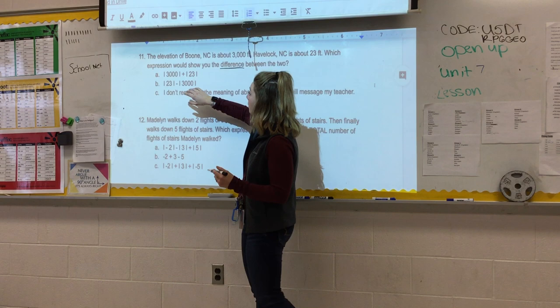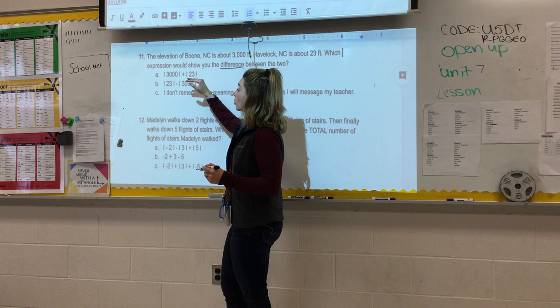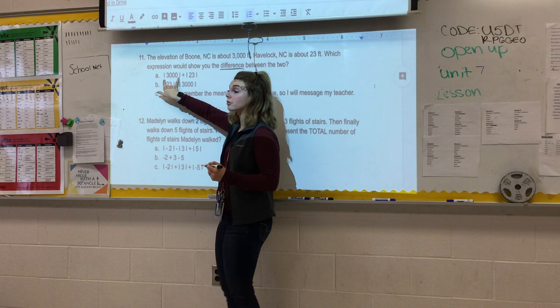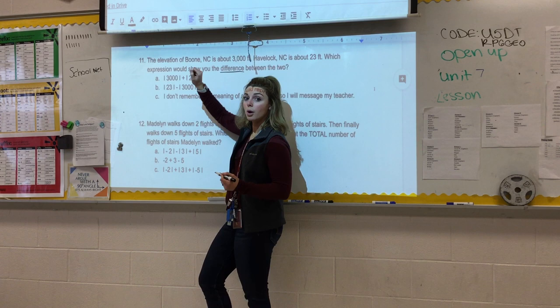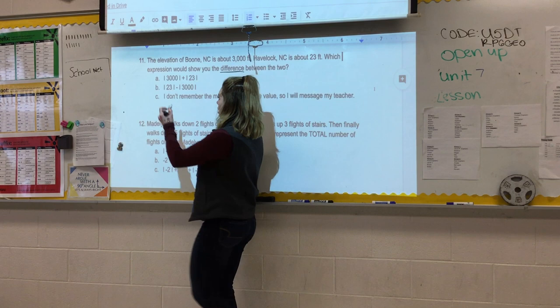So automatically, when we look at these, we can tell that these are absolute values. So this is the absolute value of 3,000 plus the absolute value of 23. Is that going to give us the difference? No, because it is addition.